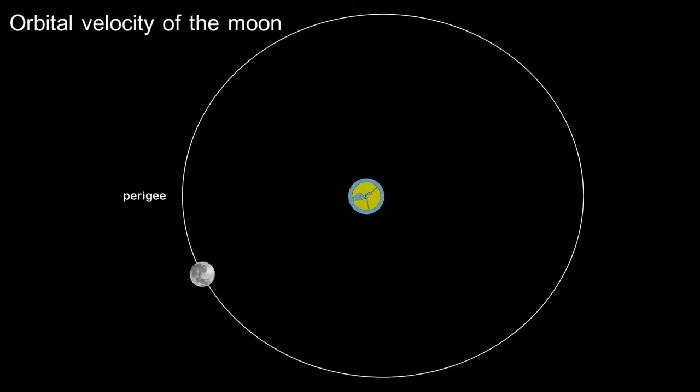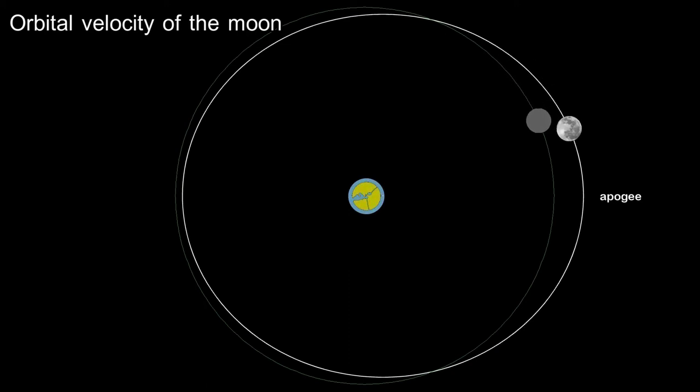Then it speeds up again until it reaches the point closest to earth and so on. This different orbital velocity accounts for about two days of deviation compared to a pure circular orbit. Amazingly this is also modeled in the Antikythera mechanism.